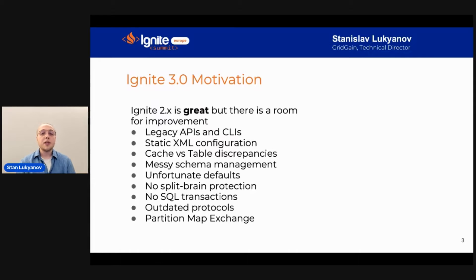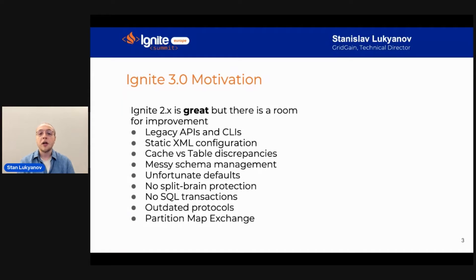Apache Ignite 2.0 is already great — it is used all around the world. But there are a few things that the community would like to improve. There are some legacy APIs that would be modernized, removed, or reworked. There are some approaches to configuration with the static XML and static configuration in general that are a bit cumbersome and a bit hard to start with.